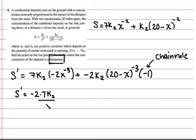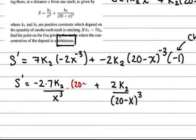Now I'm going to do a little bit of simplification, and I'm going to rewrite my negative exponents as positive exponents. And here, negative 2 times negative 1, the negatives cancel out. So I've got 2k2 over 20 minus x to the cube.